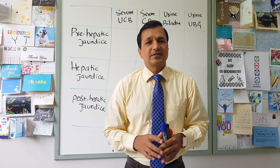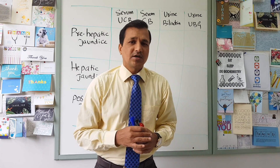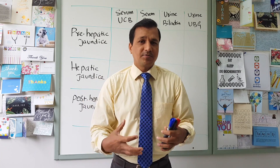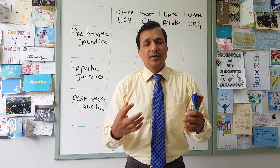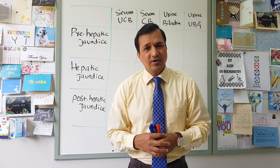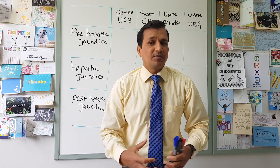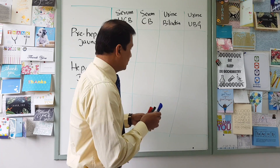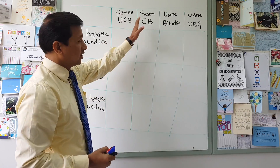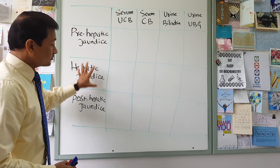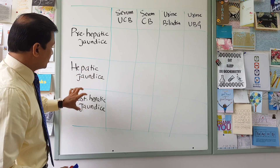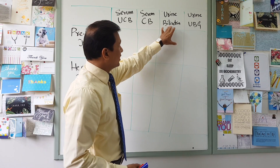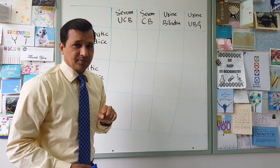Pre-hepatic jaundice — the most common cause is hemolytic anemias. Hemolytic anemias cause overproduction of bilirubin because a large number of red blood cells are dying. The bilirubin coming from the spleen goes into the liver for conjugation, but there is too much bilirubin to handle, which causes elevation of unconjugated bilirubin in the serum. I have a table here with four columns — serum unconjugated bilirubin, serum conjugated bilirubin, urine bilirubin, and urine urobilinogen — and three rows for pre-hepatic, hepatic, and post-hepatic jaundice.